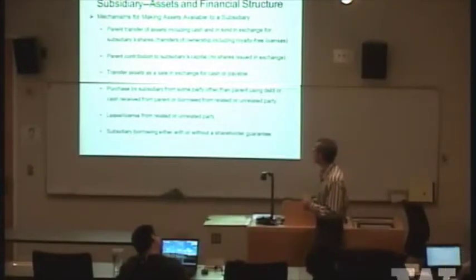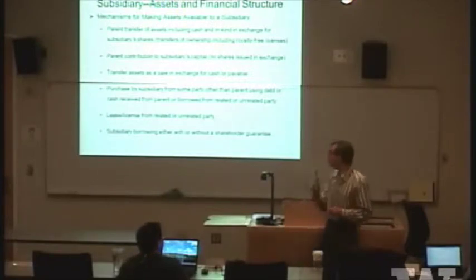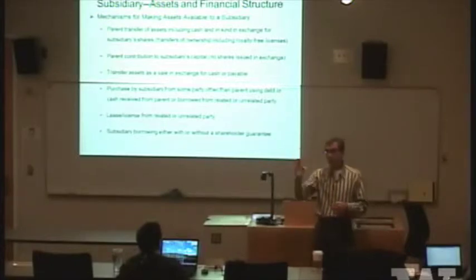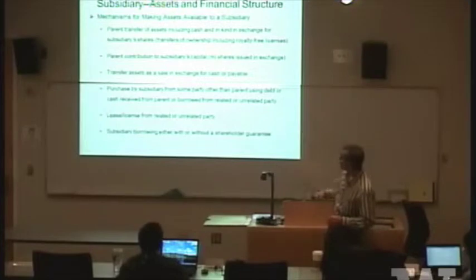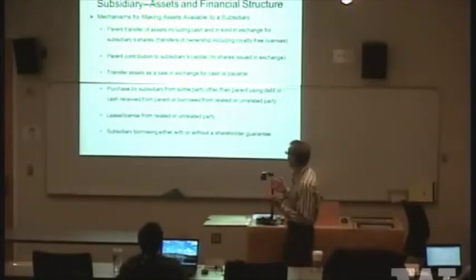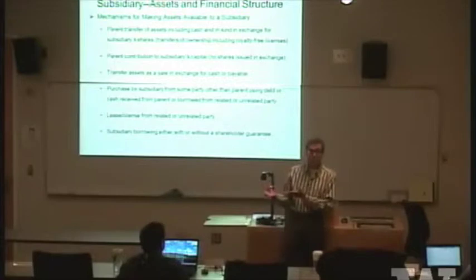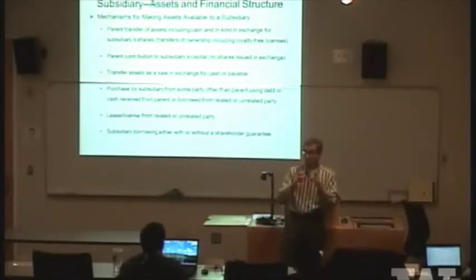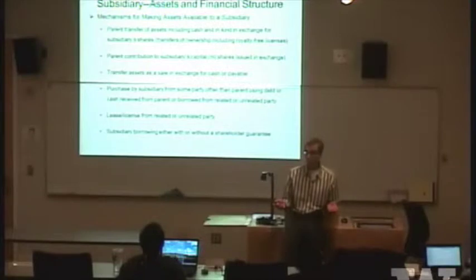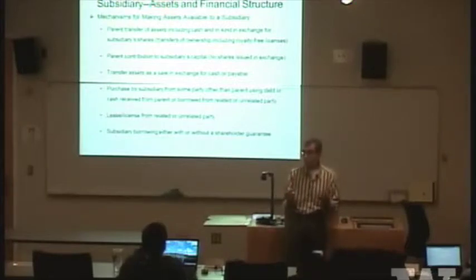There are six bullet points covering different mechanisms for how assets can be made available to a subsidiary. Notice the framing is 'make available to' rather than 'transferring' the assets. The assets will physically be in your country because they're going to be used there. We need to look at this broadly in terms of availability for use, not just restrict thinking to an actual transfer of ownership.